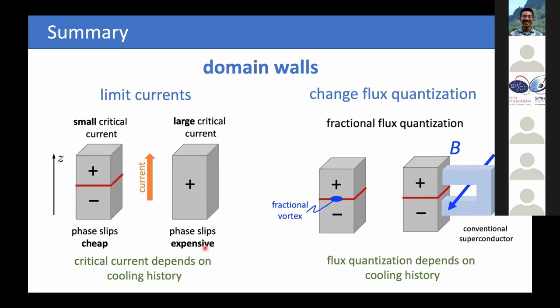It would be an interesting experiment to look at tower-like structures for a chiral superconductor and observe cooling-history-dependent critical currents: with domain walls, the critical currents should be small, but with field cooling to remove domains and make a single-domain sample, the critical current should be large.